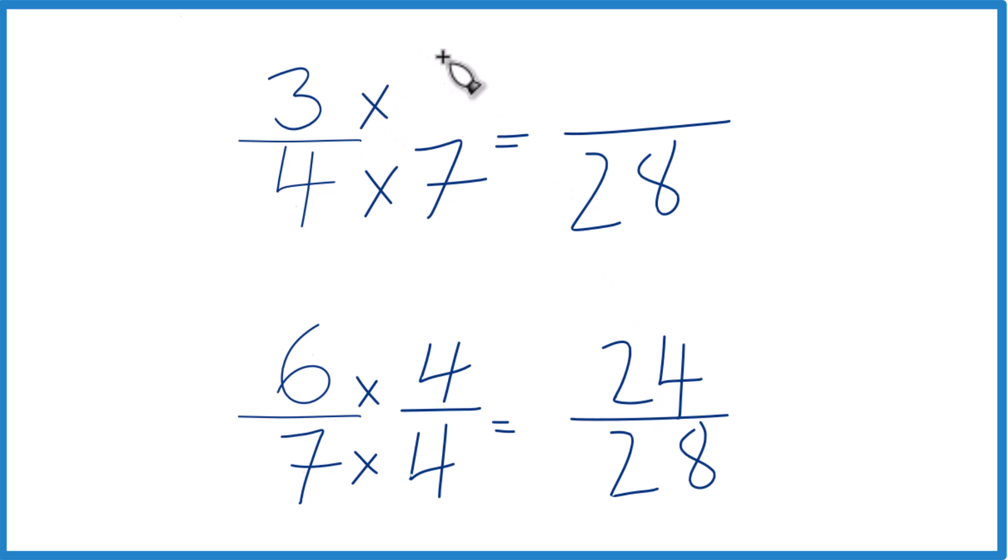Up here, let's multiply it by seven. Three times seven is twenty-one. And now same denominator. Compare the numerators. Twenty-four is greater than twenty-one. So twenty-four twenty-eighths is greater than twenty-one twenty-eighths by three twenty-eighths.